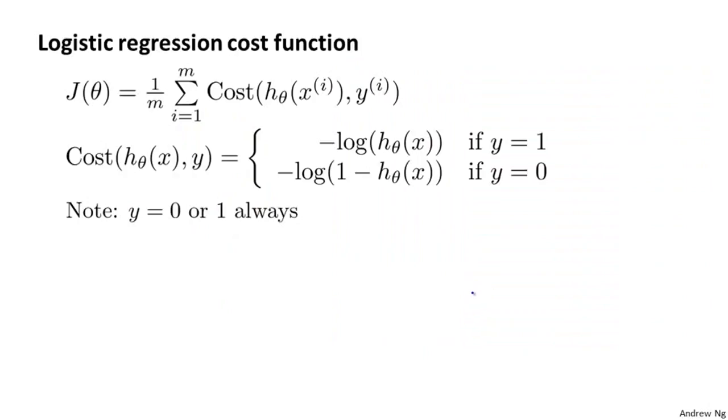Here's our cost function for logistic regression. Our overall cost function is 1 over m times sum over the training set of the cost of making different predictions on the different examples with labels y i. And this is the cost for a single example that we worked out earlier.